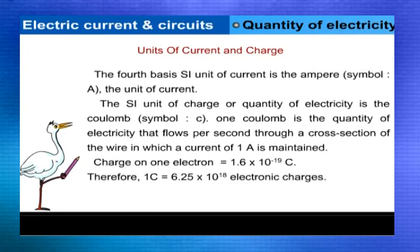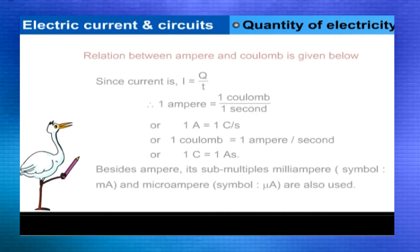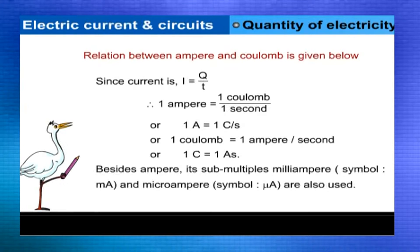The SI unit of current is the ampere, symbol A. The SI unit of charge or quantity of electricity is the coulomb, symbol C. One coulomb is the quantity of electricity that flows per second through a cross section of the wire in which a current of one ampere is maintained. The charge on one electron is equal to 1.6 × 10⁻¹⁹ coulombs. Therefore, one coulomb is equal to 6.25 × 10¹⁸ electronic charges. The relation between ampere and coulomb is given below.